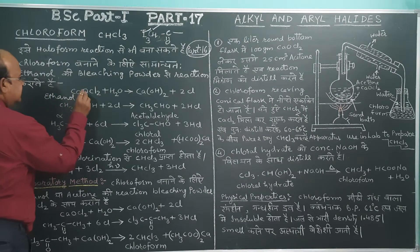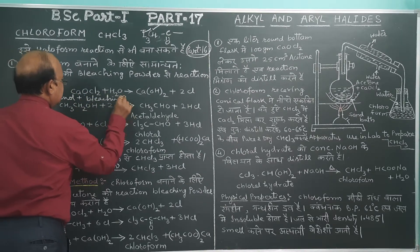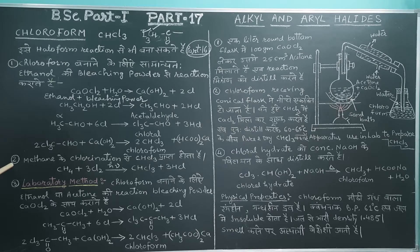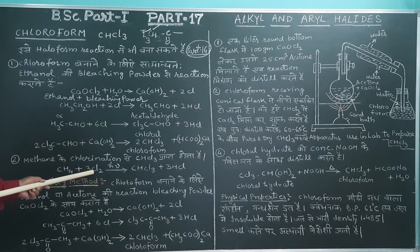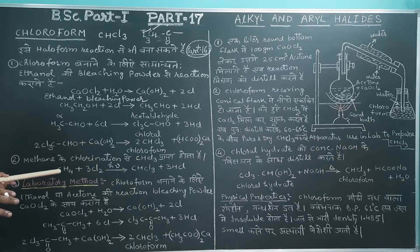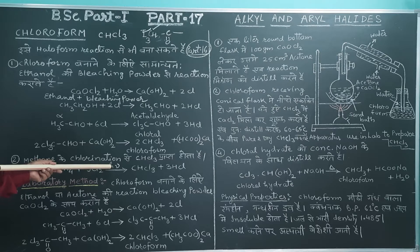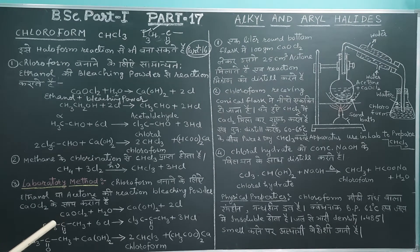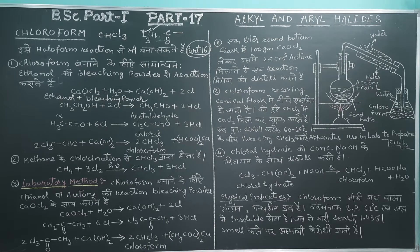So this is the first method of making chloroform — using ethanol and bleaching powder. The second method, children, is the reaction of methane and chlorine — this is chlorination of hydrocarbon, addition of Cl in the hydrocarbon. Hydrocarbons include alkane, alkene, alkyne. So chlorination of hydrocarbon in the presence of sunlight: methane reacts with chlorine in the presence of sunlight to form CHCl₃. This method is somewhat uncommon but students should know it.